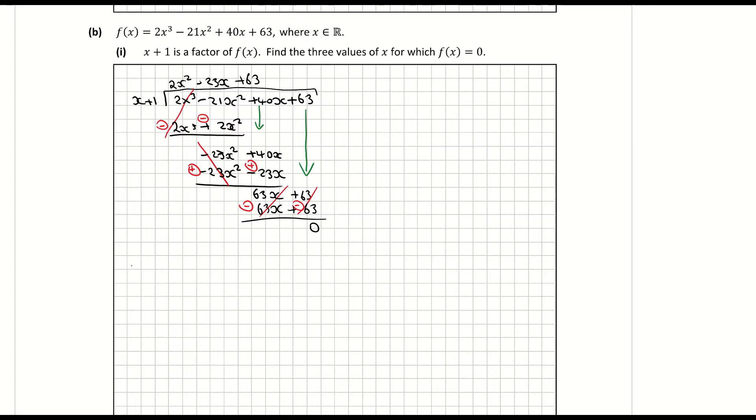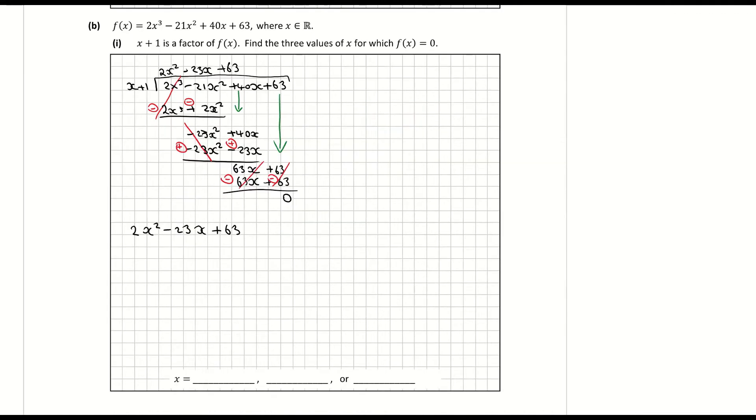So I now have my factor x plus 1 but I have another factor here which is 2x squared minus 23x plus 63. So I've left myself with a quadratic equation here. 2x squared minus 23x plus 63. So I'm going to use my minus b formula here to factorize this.